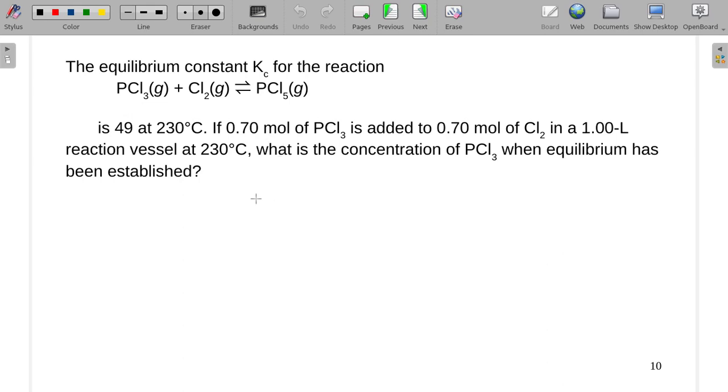So we are going to set up an ICE table using our concentrations, since I gave you a Kc. And we are going to convert these into molarities when they go in there. But that's easy in this case, because I gave us 1 liter of the number of moles. So this is just 0.7 molar. This is 0.7 molar.